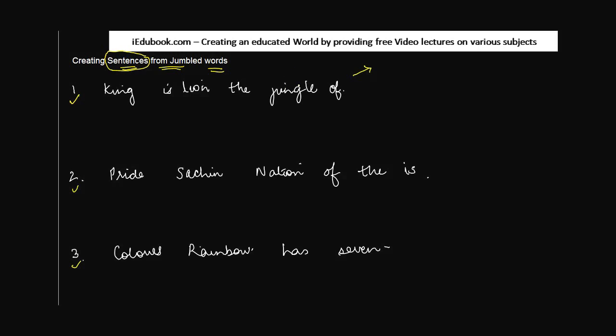Let's see the first one. For example, the first one reads as: king is lion the jungle of. Can you understand the head and tail of it? No. But here you have to exercise your intellectual skills. We know that lion is the king of the jungle, right? This is what we have been told ever since we were kids.